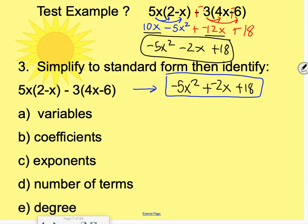So the variable, there's only 1. That's the x. The coefficients are negative 5, negative 2, and positive 18. The exponents, there's an exponent of 2. There's an exponent of 1. And technically, you could think of this as 18 times x to the 0. Because x to the 0, anything to the 0 power is 1. So there's technically a 0 degree term in there as well. A constant term is a 0 degree term. There are 3 terms. And the degree of the expression of the polynomial is the degree of the highest degree term, which is 2.